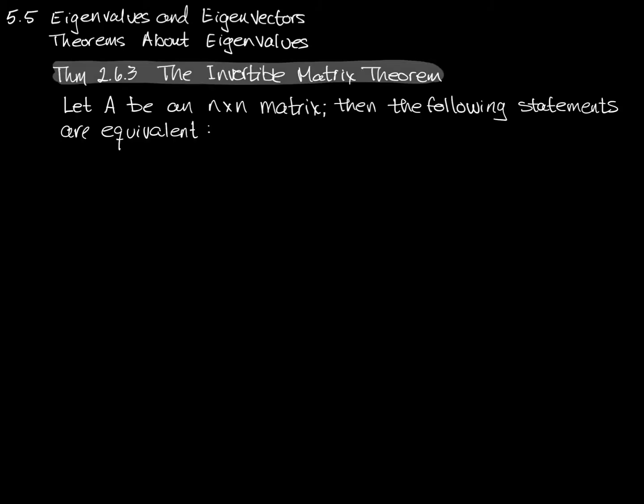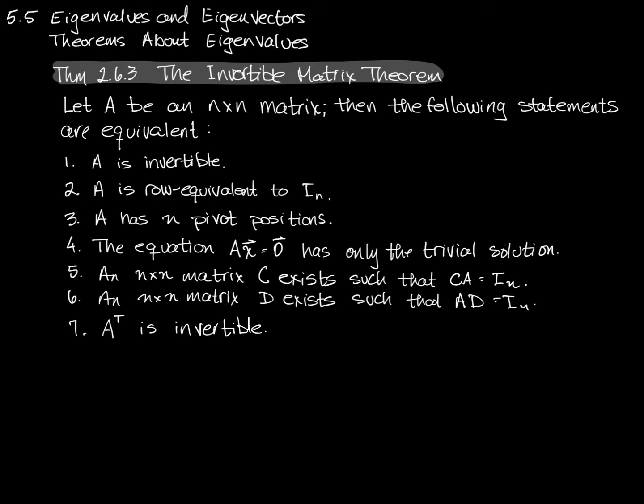As a reminder, all that means is that if you know one of these statements, you know all the other six. If one is true, they're all true. A is invertible. A is row equivalent to the n by n identity matrix, I sub n.